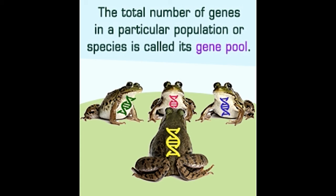The potato originated in the western part of South America, from where it spread to Europe and Ireland, where it eventually became a staple food for the population. Since all potatoes grown in Ireland descended from a small number of plants, the small gene pool made the entire crop susceptible to blight, a fungal plant disease. Potato crops all over the country were ruined in the mid-19th century, causing a million deaths due to starvation.